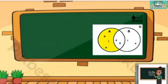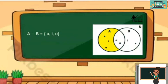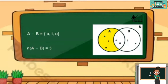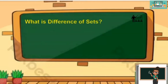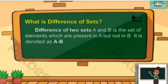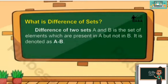Now look at the shaded part — that is A minus B, wherein the elements are A, I, and U. The cardinality of A minus B is equal to 3. The difference of two sets A and B is the set of elements which are present in A but not in B. It is denoted as A minus B.